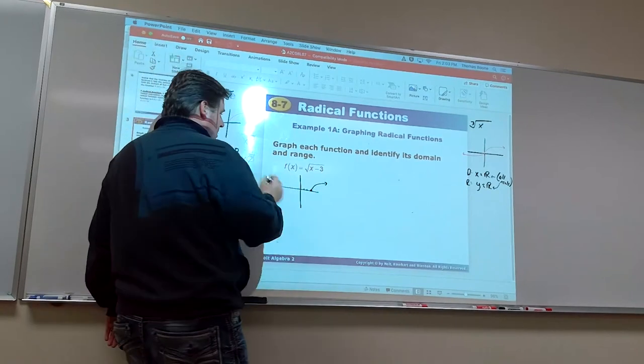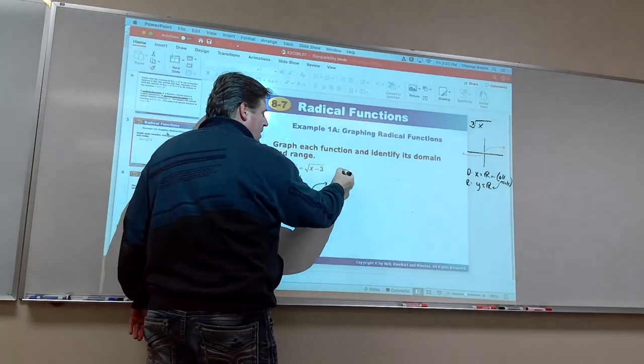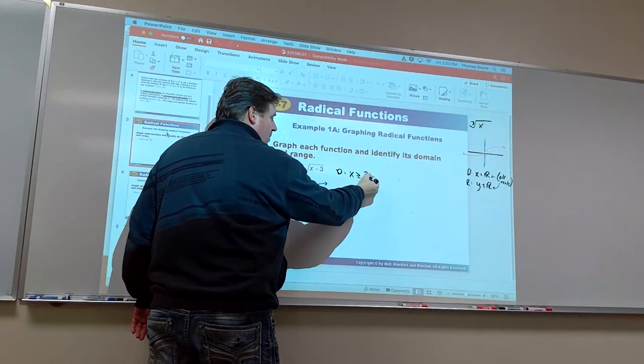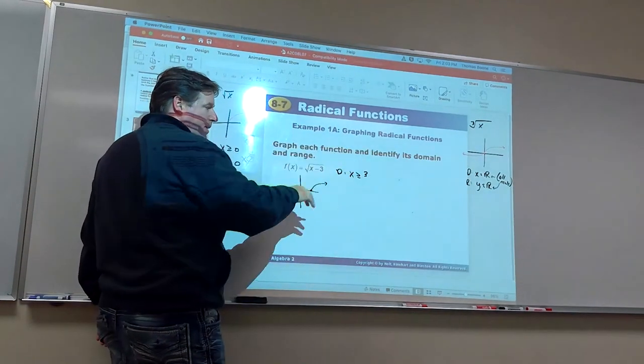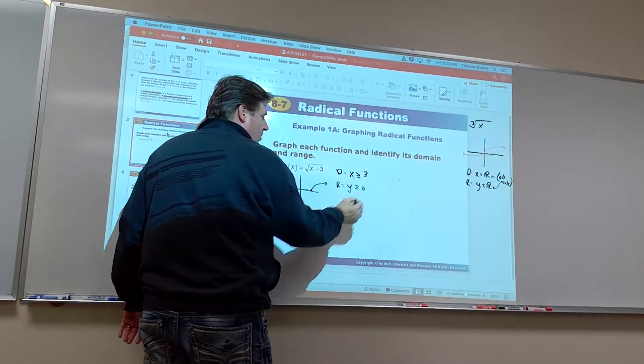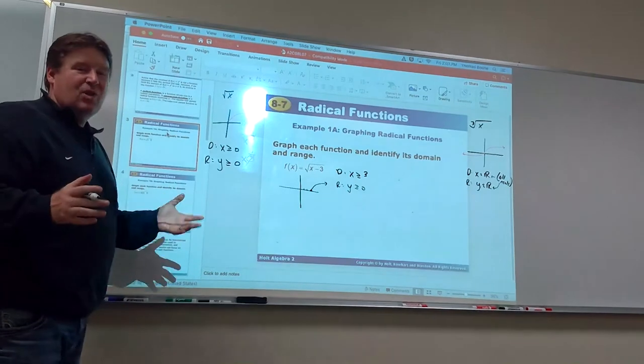So, in this case, since we moved it over to the right, we now say that the domain is that x is greater than or equal to 3. See how it starts at 3 and goes to the right? And the range didn't get changed, so we'd say that y is still greater than or equal to 0.